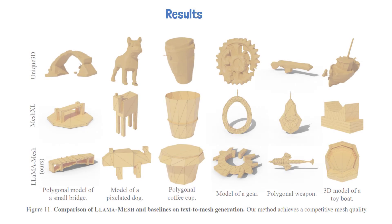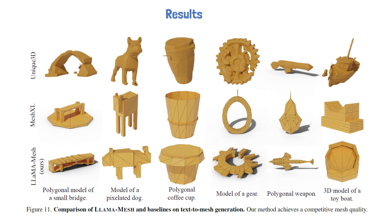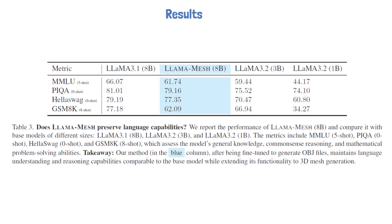Let's now see some results presented in the paper. In the following figure, we can see a comparison of generations with other strong mesh generation models. LLaMA Mesh generations are in the bottom row, showing competitive quality with the other models. However, LLaMA Mesh has the advantage of being able to communicate with both text and 3D objects. We can see another interesting result in the following table, where the researchers check whether LLaMA Mesh preserves the language capabilities of the pre-trained model. Observing the LLaMA Mesh model results in blue, there is some hit in performance compared to the pre-trained 8 billion parameters model. However, the results are still better than the 3 billion parameters version of LLaMA 3.2.